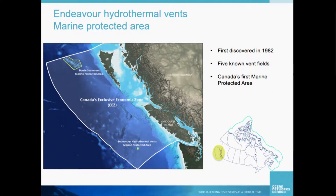Here's a map of where the Endeavour hydrothermal vents marine protected area is — it's a pretty small area just in the south of that image. Within Canada's EEZ there are two MPAs. The Endeavour hydrothermal vents was first discovered in 1982 but officially became an MPA in 2003. More recently we have the Bowie seamount, which is just recently discovered, so there's a lot of hype around that one.